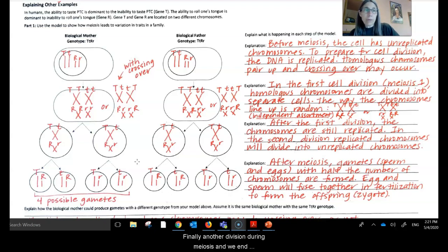Finally, another division during meiosis, and we end up with the gametes. And so mom has produced eggs and dad has produced sperm. That's what gametes are. And so here we see the different possible combinations in these gametes. So here this gamete has a dominant allele for each of the genes of interest. This ends up with a dominant and a recessive. And you can see there's a variety of combinations of alleles that have ended up in these gametes.